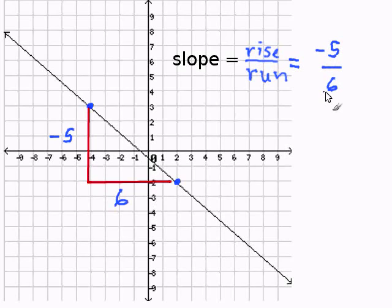So, my slope is negative 5 over 6. Simplifying it further, I get a slope of negative 5 over 6. And this completes my problem.